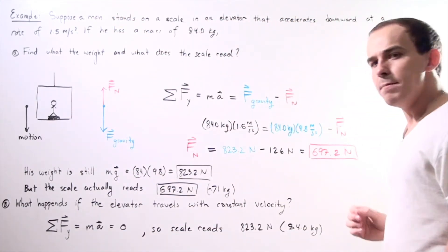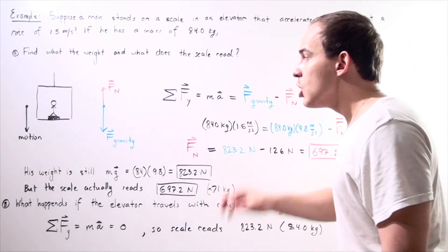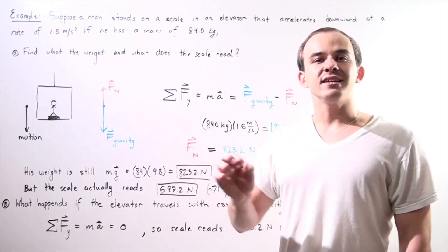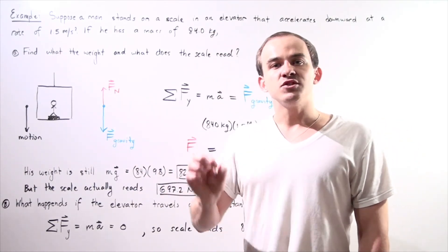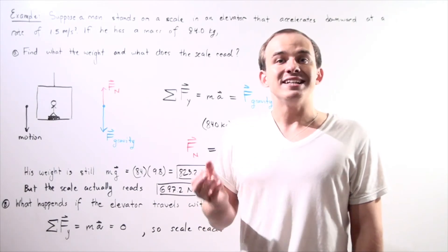Now, what happens if the elevator is traveling downward with a constant velocity? Well, if the velocity is constant, that means we have no acceleration, and so our acceleration is zero.